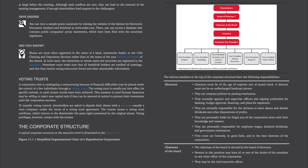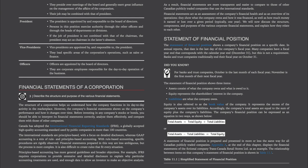Directors must act honestly, in good faith, and in the best interests of the corporation. The Chairman of the Board is elected by the board of directors. Persons in this position may have all or any of the duties of the president or any other officer of the corporation, may be the chief executive officer, and generally exert great influence on the management of the affairs of the corporation. Their job may be combined with that of president. The President is appointed by and responsible to the board of directors, exercising authority through the other officers and through the heads of departments or divisions.